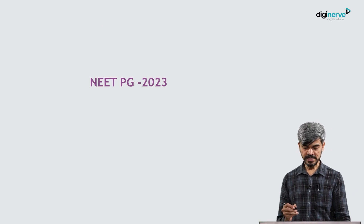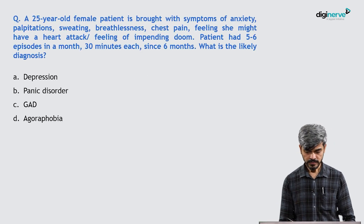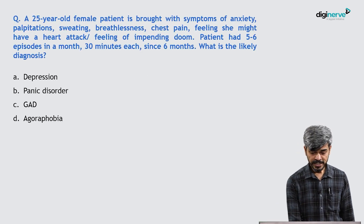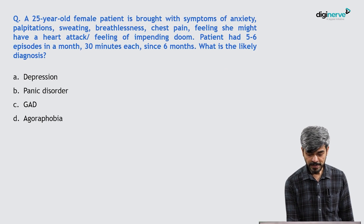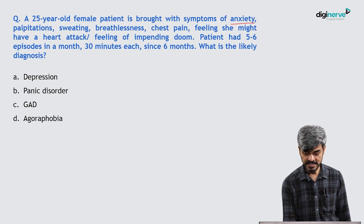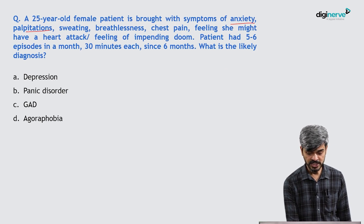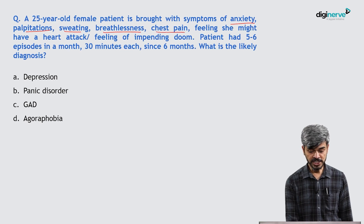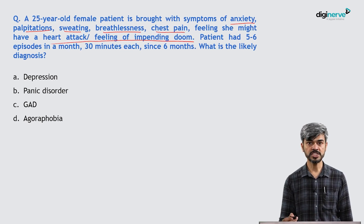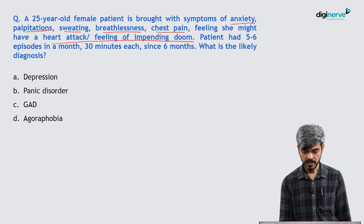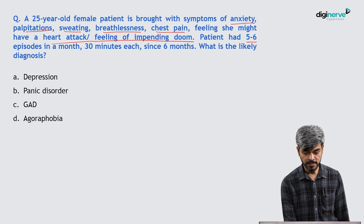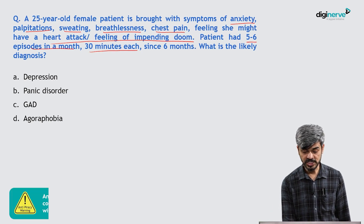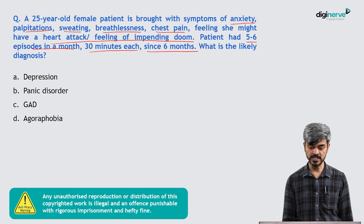Now coming to NEET PG 2023 questions. A 25-year-old female patient is brought with symptoms of anxiety, palpitation, sweating, breathlessness, chest pain, feeling she might have a heart attack, and feeling of impending doom. The patient had 5 to 6 episodes in a month, each lasting 30 minutes, over 6 months. What is the likely diagnosis?